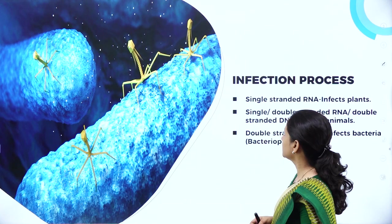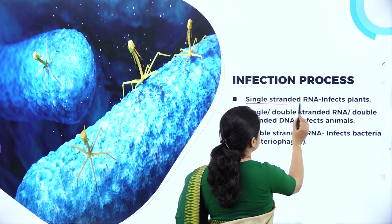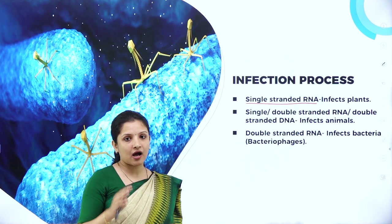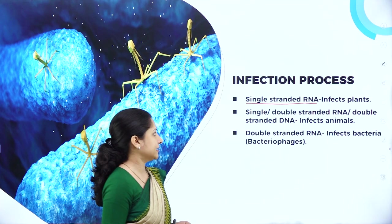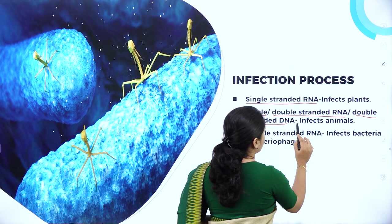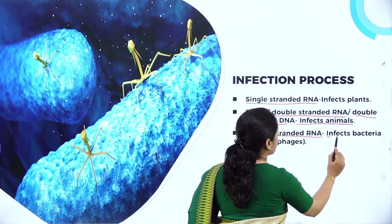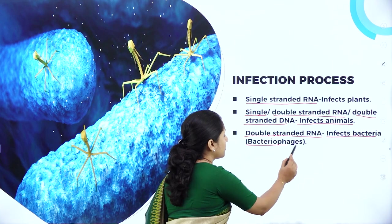Talking about the infection process of viruses: those viruses that infect plants are made up of single-stranded RNA — meaning, all viruses having single-stranded RNA are capable of causing diseases or infection in plants. All those viruses which have either a single-stranded RNA, a double-stranded RNA, or a double-stranded DNA are the ones that can cause infection or diseases in animals. And those viruses that have double-stranded DNA are the ones that infect bacteria, and such viruses are called bacteriophages. This is very important — it can come for the exam.